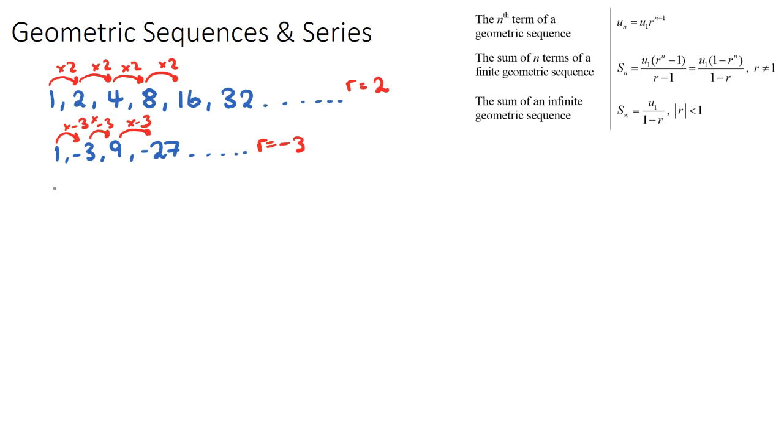Another example might be 32, 16, 8, 4. Then we have 2, 1, one half, one quarter, and so on. Now we have a sequence that's shrinking, it's getting smaller. And our ratio here will be positive one half, because 32 times one half is 16, times one half is 8, times one half is 4.